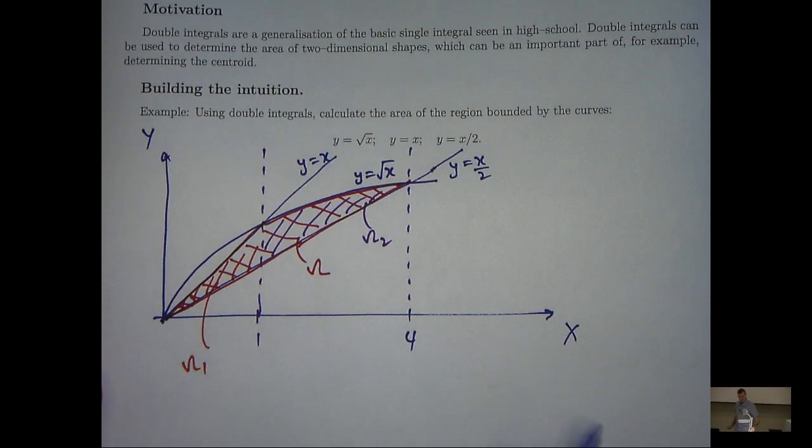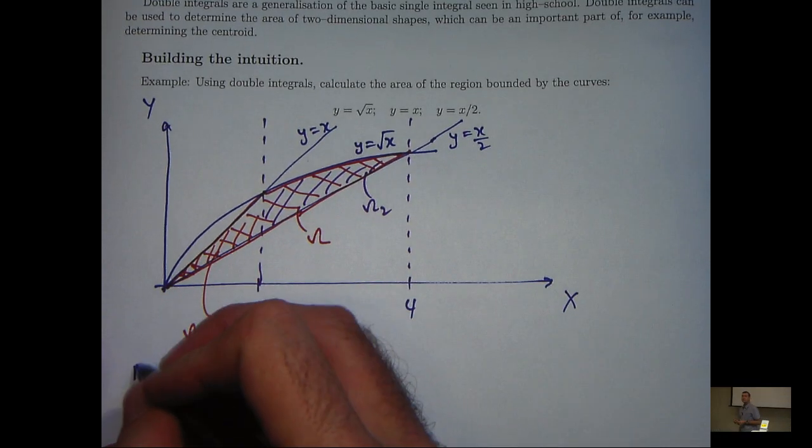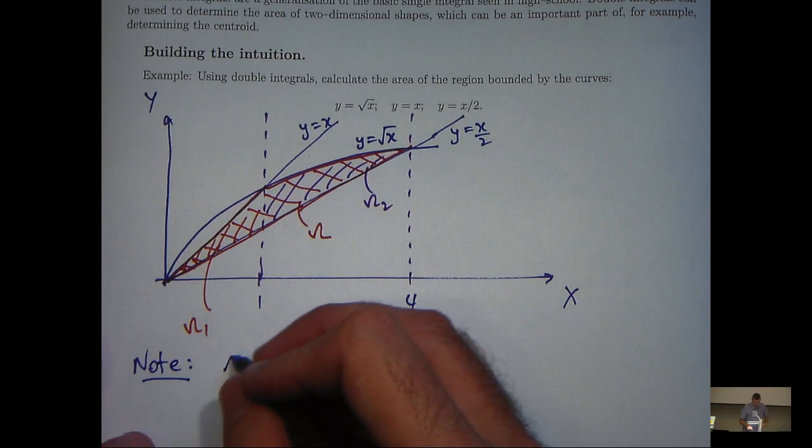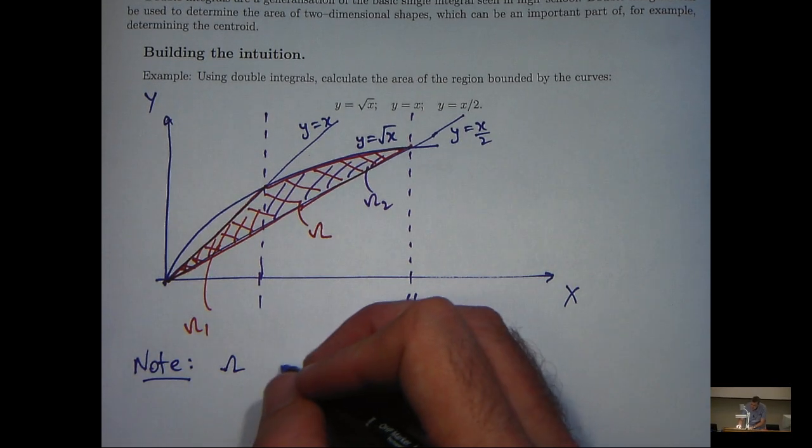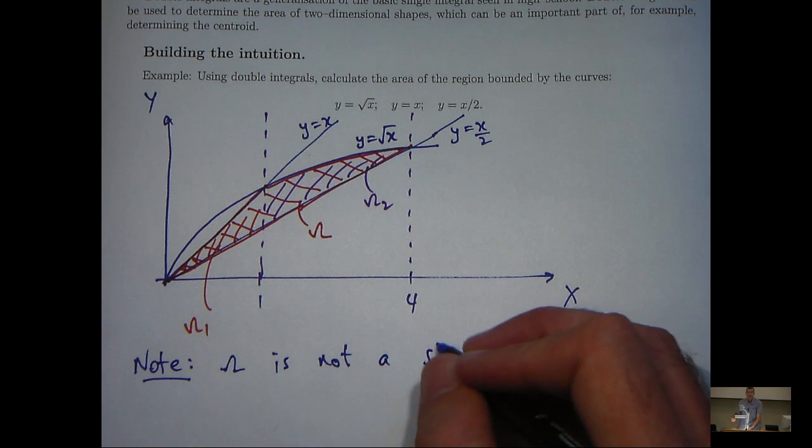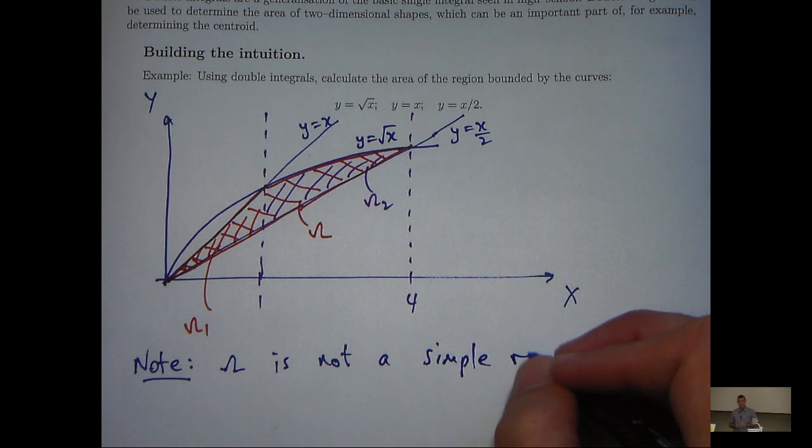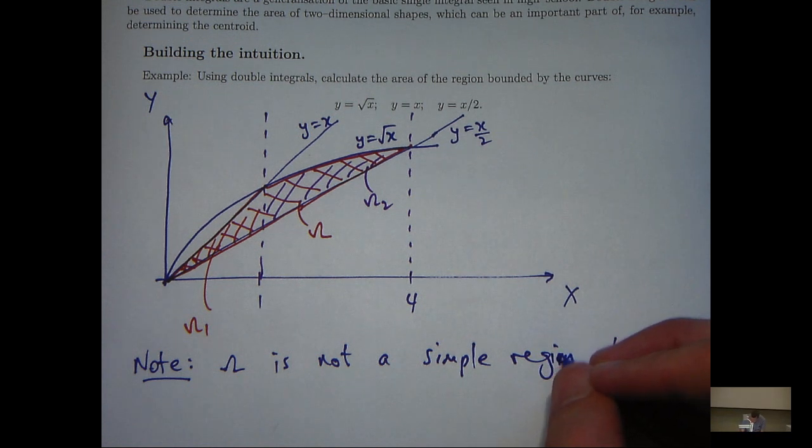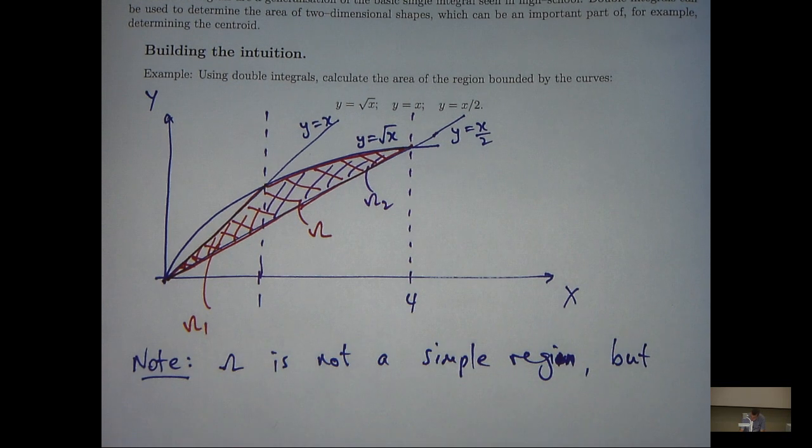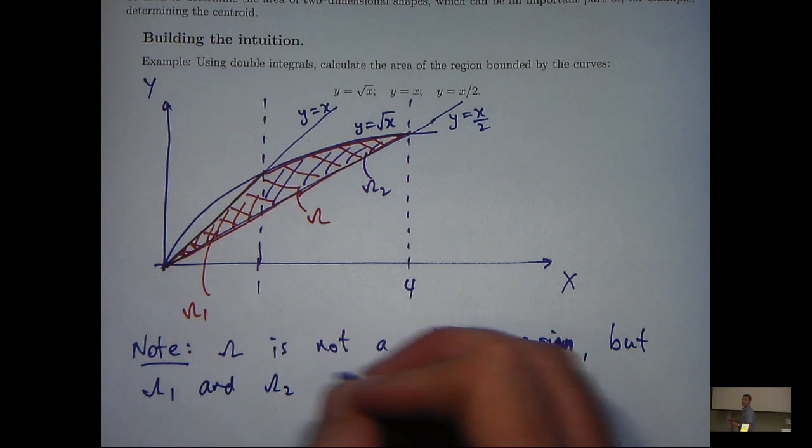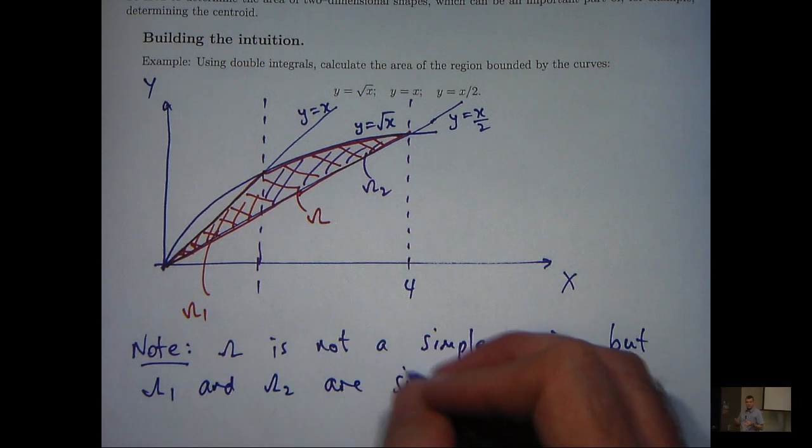So it's important to first of all realize that, note, our original region is not a so-called simple region, but omega 1 and omega 2 are simple.